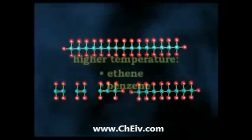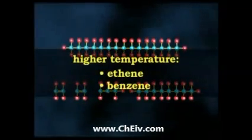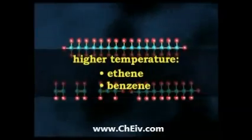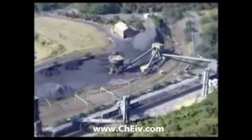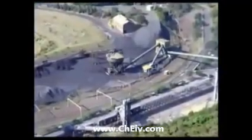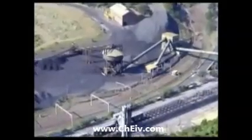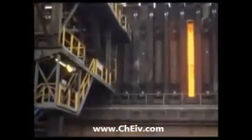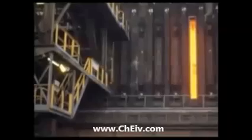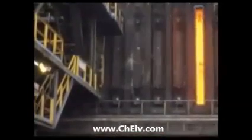Higher cracking temperature favours the production of ethene and benzene. In the coking unit, bitumen is heated and broken down into petrol alkanes and diesel fuel, leaving behind coke — a fused combination of carbon and ash. Coke can be used as a smokeless fuel.